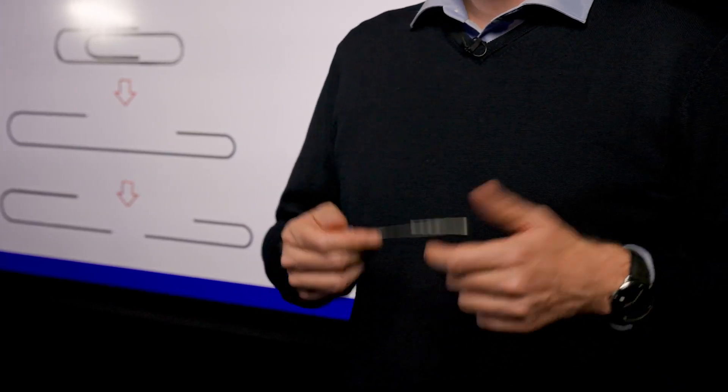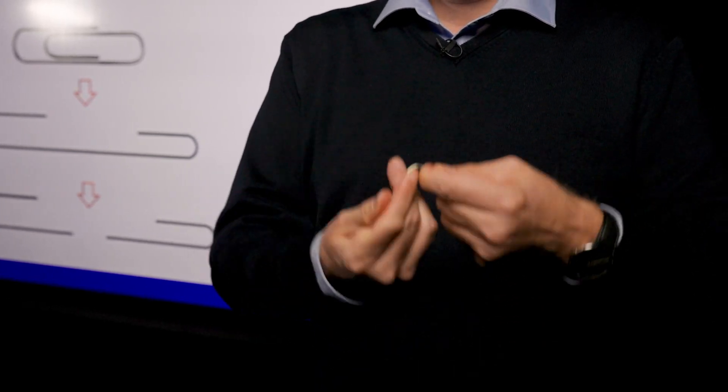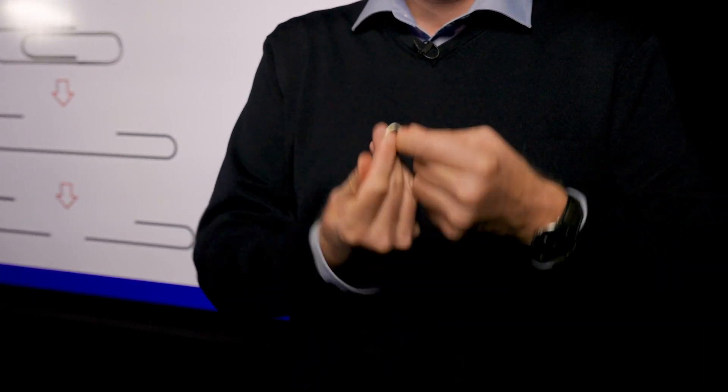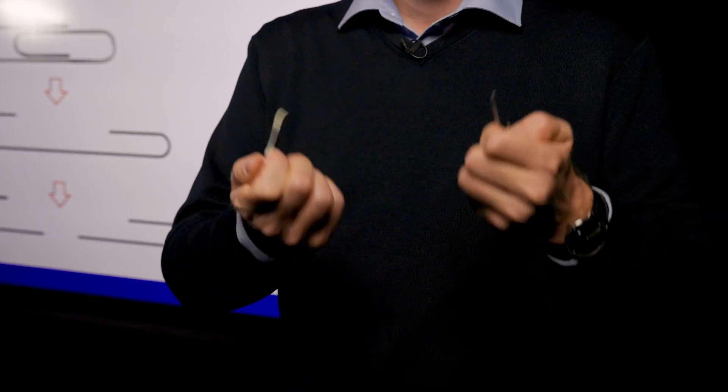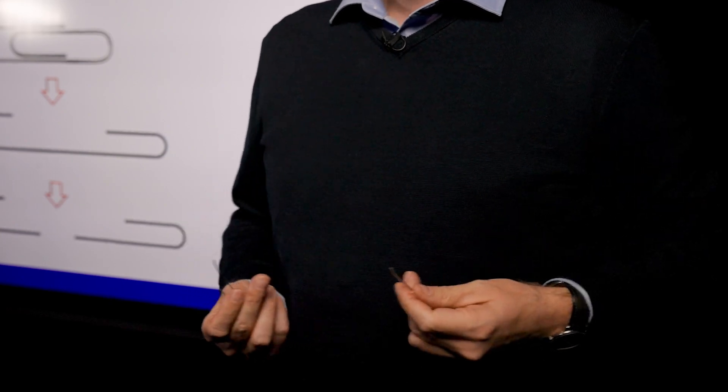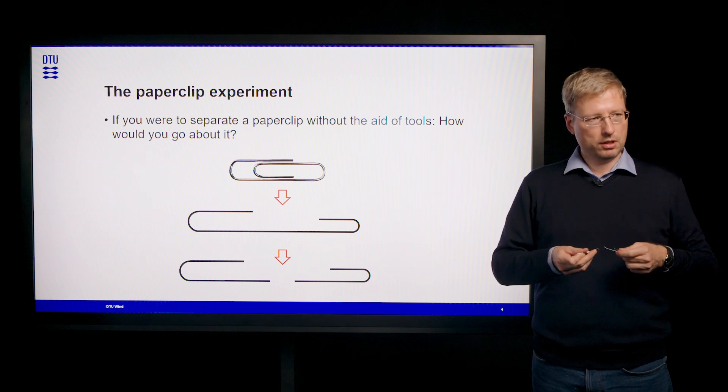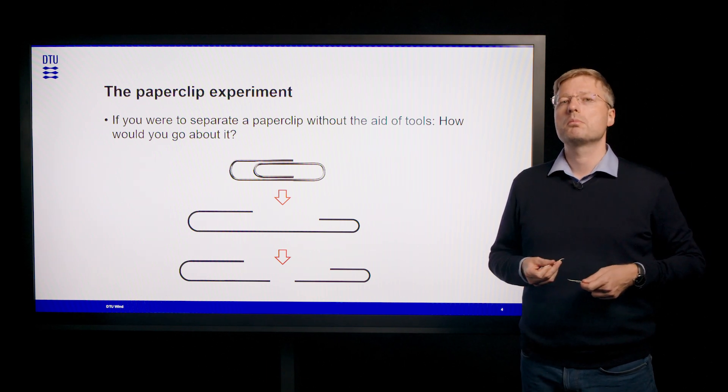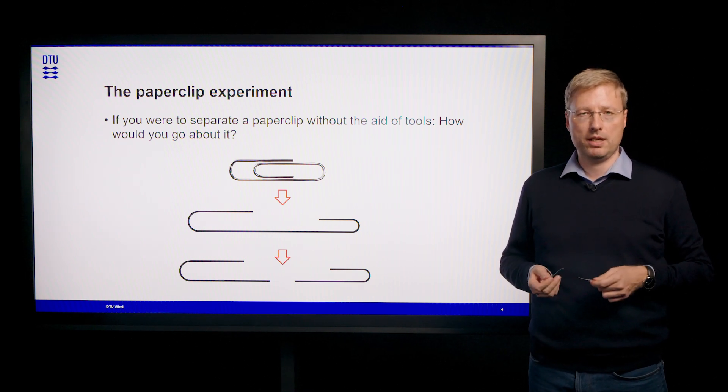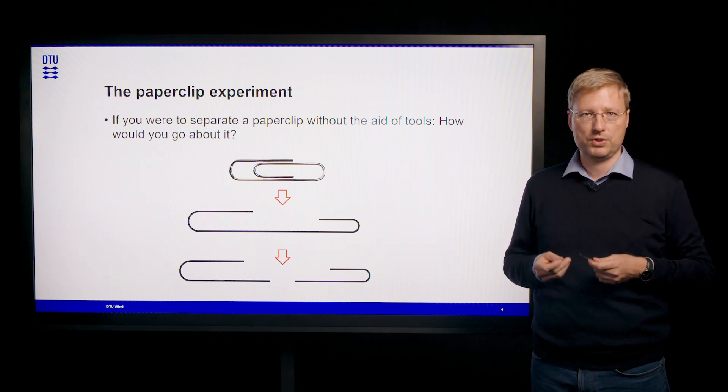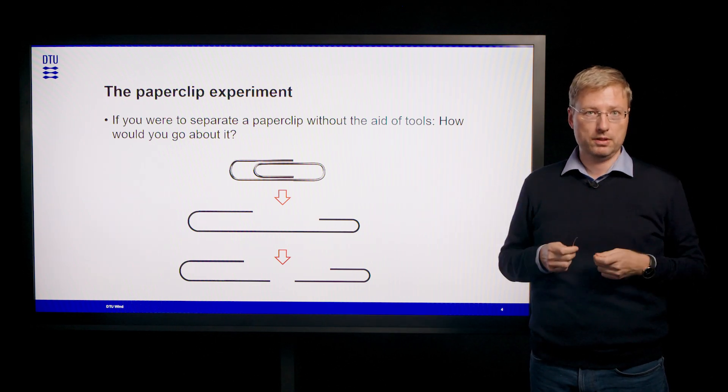Now the obvious answer is that we take the paper clip in our hands and we wiggle it up and down like this. It's a cyclic loading situation until we feel that the material softens up. It also gets warm and it separates. So one thing is that we could feel that there is some damage accumulating in the material as it softens up. But the most important thing is that I was able to separate a very high strength steel wire with the low force of my hands and I would not have been able to separate the paper clip just by pulling it apart.